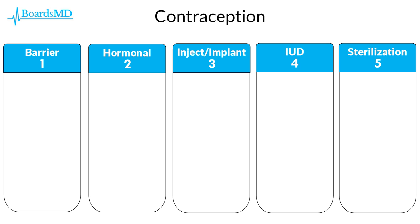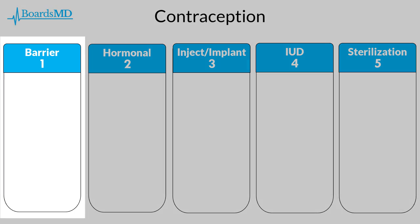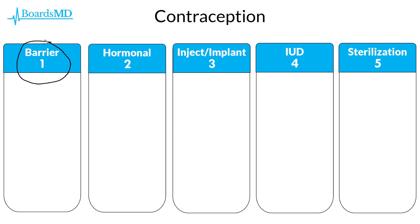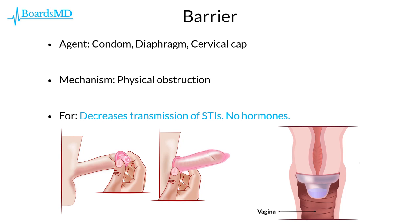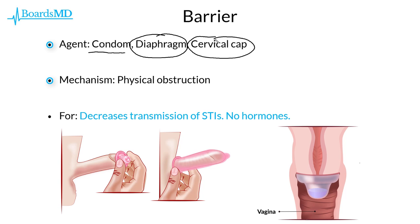We will begin our discussion first with barrier contraception, which includes the male and female condom as well as the cervical diaphragm and cervical cap. When it comes to barrier contraception we have several agents we can utilize, including the male and female condom — although especially for examinations the male condom is far more likely to be the correct answer. Other options include the cervical diaphragm and cervical cap. The mechanism, as evident in the name, is that these methods form a physical obstruction.